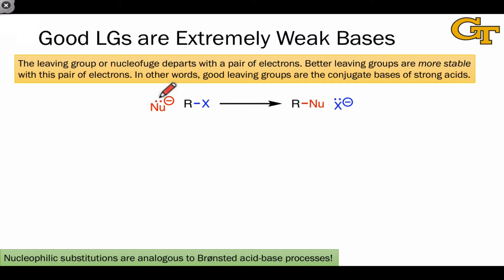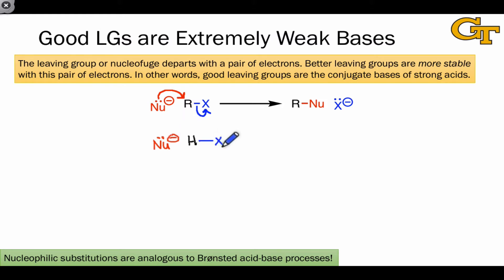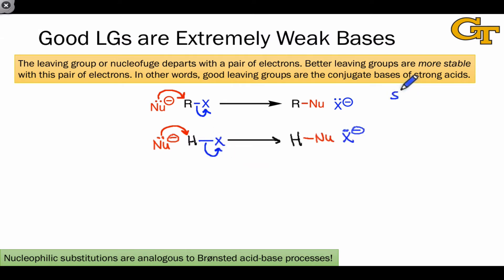In a nucleophilic substitution reaction, the leaving group departs with a pair of electrons. The nucleophile donates a pair of electrons to R, the electrophile, and either simultaneously or in a different elementary step, the leaving group departs. This electron flow is identical to the electron flow in a Brønsted acid-base process. The only difference is that the electrophilic atom R has been replaced with H, so a proton is transferred rather than an electrophilic group R. If X⁻ is stable due to resonance delocalization, electronegativity, or hybridization, then X is a good leaving group.